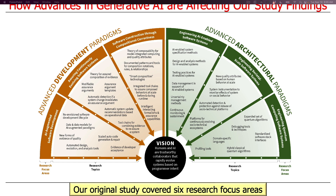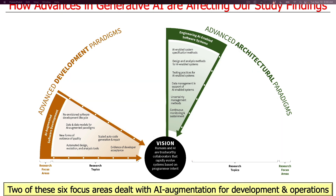The study we did covered six research focus areas. I'm going to focus on just the two that dealt with AI augmentation. The first is AI-augmented software development — using tools to build systems that employ AI techniques. The second is engineering AI-enabled software systems — building systems whose operation uses artificial intelligence. Those are the two main areas I'll focus on in this talk.